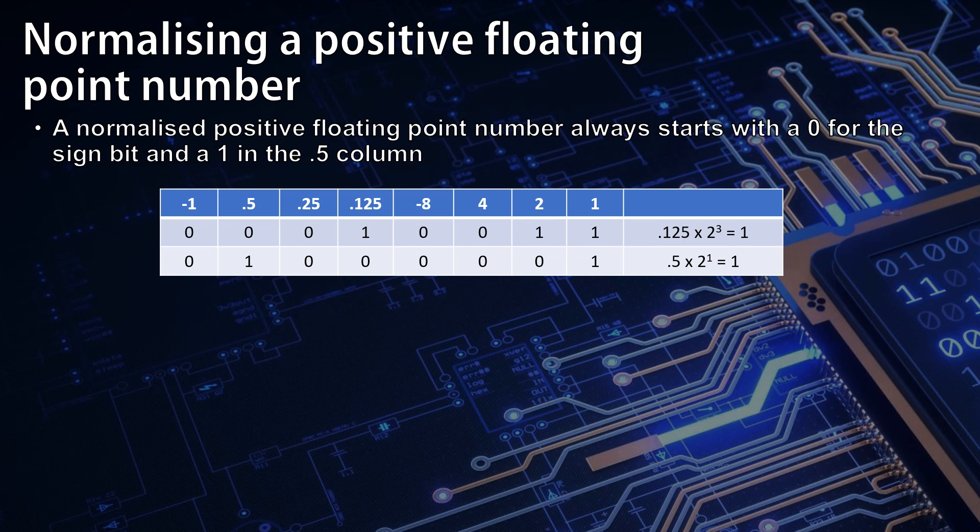If we have a number such as we have here, 0, 0, 0, 1, 0, 0, 1, 1, and it actually represents 0.125 times 2 to the power of 3, which is 1, we could actually represent it more accurately by normalizing that number.